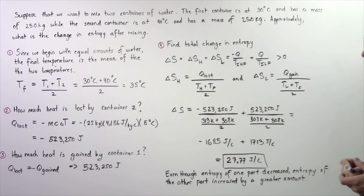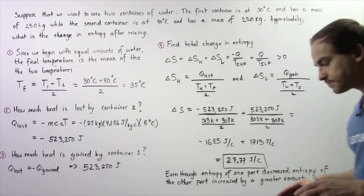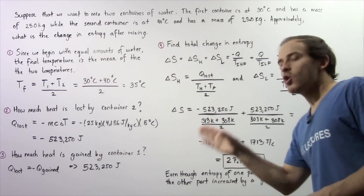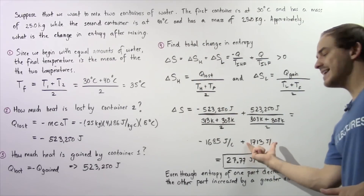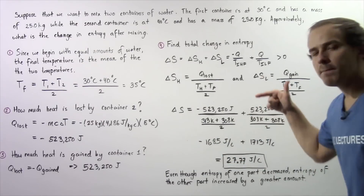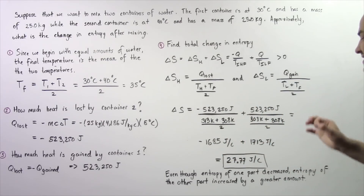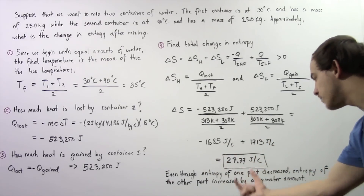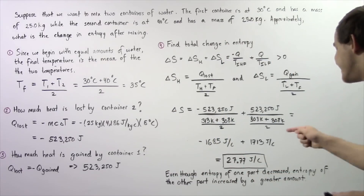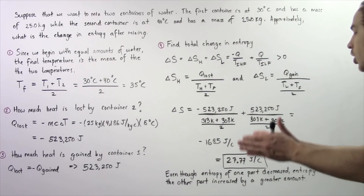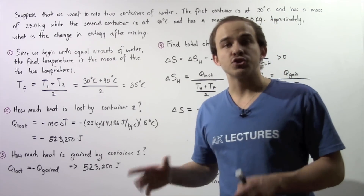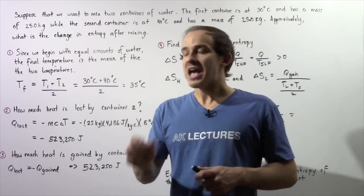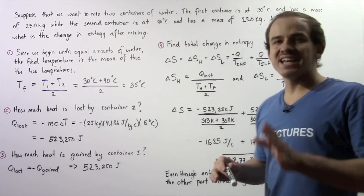This gives us two quantities: the entropy of container two decreased while the entropy of container one increased. Summing these values, we get a positive value of 27.77 joules per Celsius. This implies that even though the entropy of one part of our isolated system decreased, the entropy of another part increased by a greater amount, so the total change in entropy of our isolated system increased. And that's exactly what the second law of thermodynamics tells us.